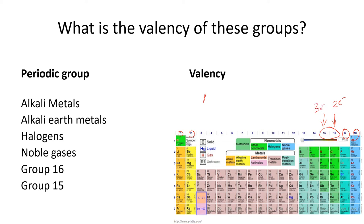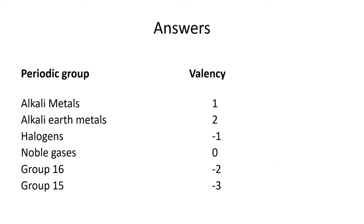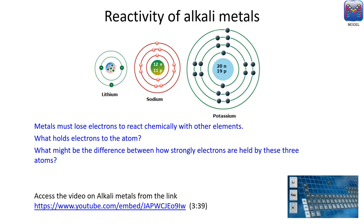So how do we write that? Alkali metals have one electron and will lose one. Alkali earth metals will lose two. The halogens have a deficit of one — they've got seven electrons and want one more, so they have a deficit of one. That's probably an easier way to think about it. I've got a video here for you to look at — pause this video, go check that one out and come back. It's only a short one, just over three minutes.